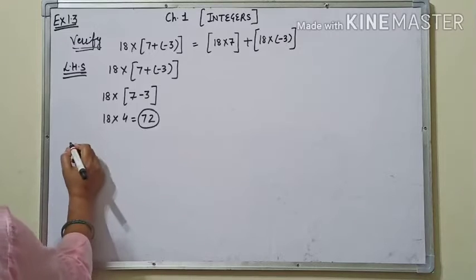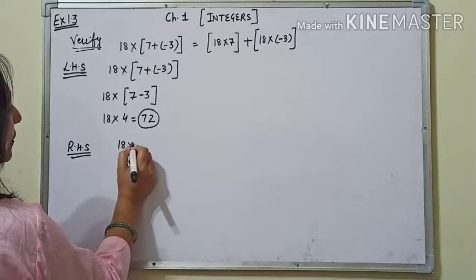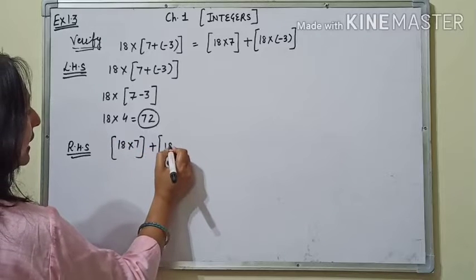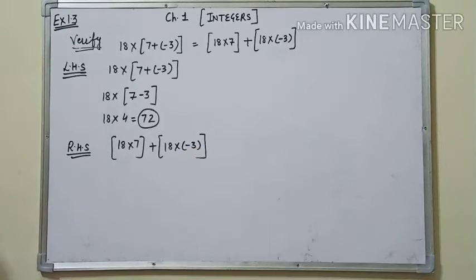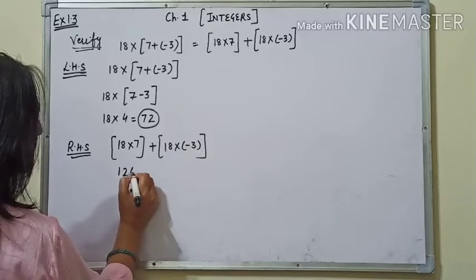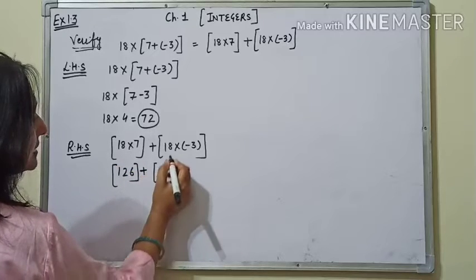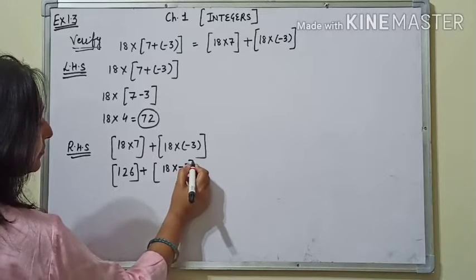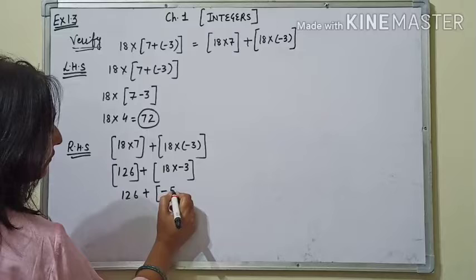अब हम लेते हैं RHS। RHS में हमारे पास है: 18 into 7 plus 18 into (-3). Let us solve this. 18 into 7 = 126, plus 18 into (-3) = 126 plus minus 54.